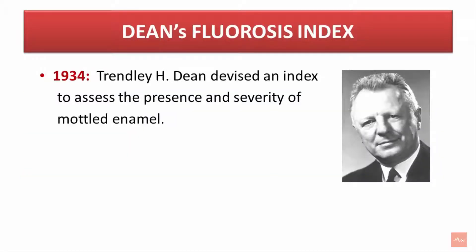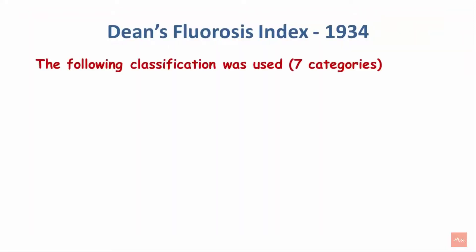Now let's talk about Dean's fluorosis index. This index was introduced by Trendley H. Dean in the year 1934. He devised it to assess the presence and severity of mottled enamel. The 1934 Dean's fluorosis index had seven categories.